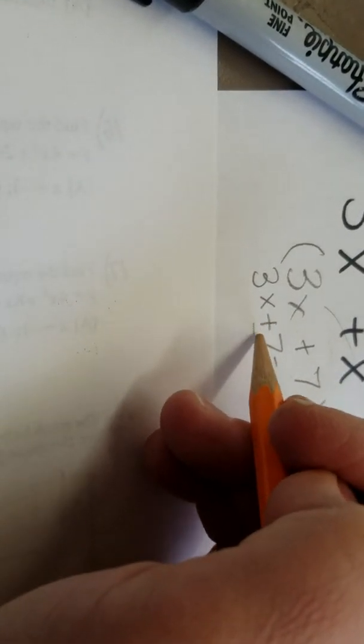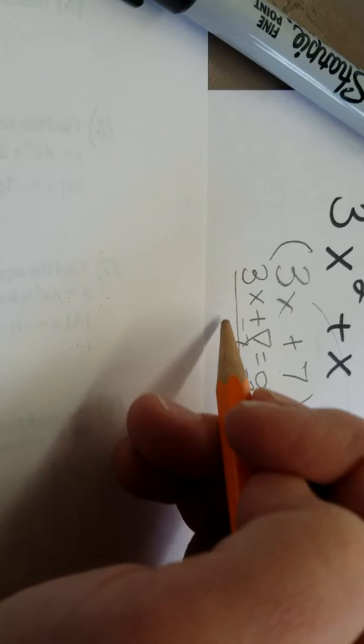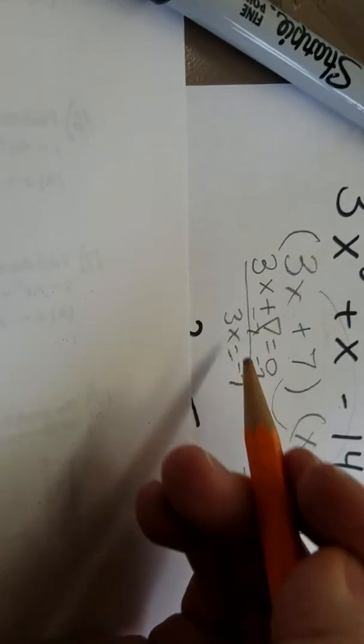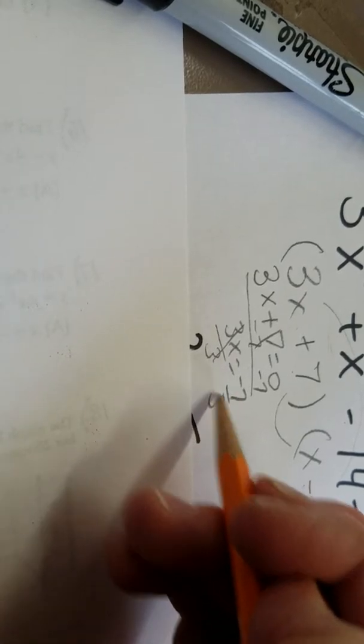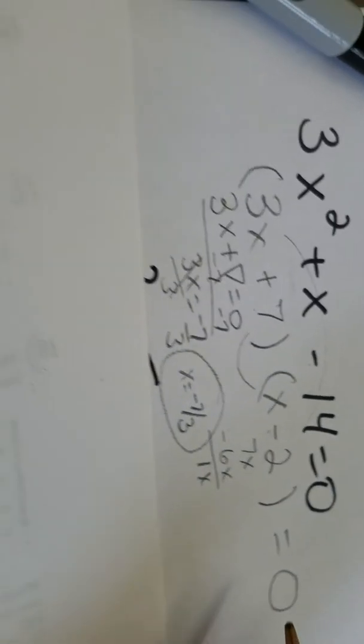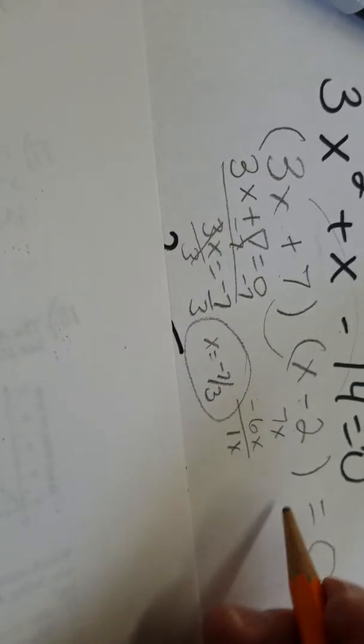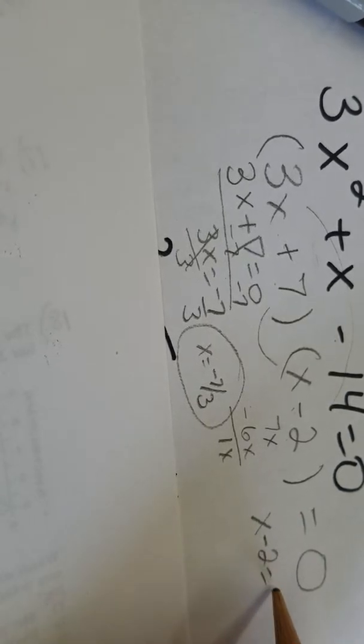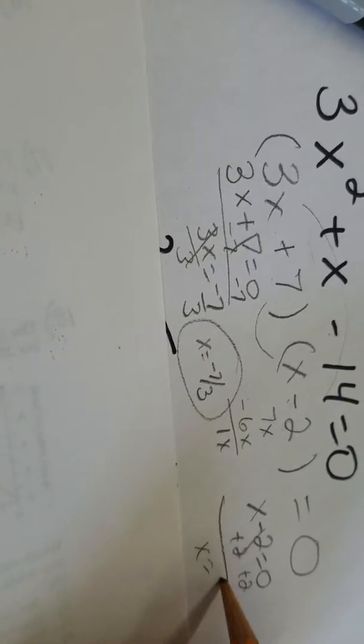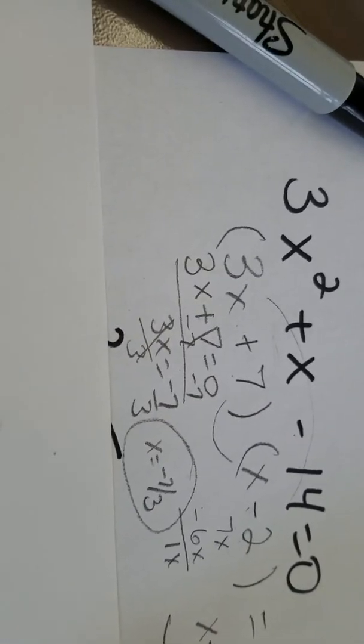3x plus 7 equals 0. Subtract 7 from both sides. 3x equals negative 7. I divide both sides by 3, and x equals negative 7 thirds. No problem leaving him in a proper fraction. You could change it into a mixed number if you wanted to. And the other one, x minus 2 equals 0. I add 2 to both sides, and x equals 2. So those are my two roots on that one.